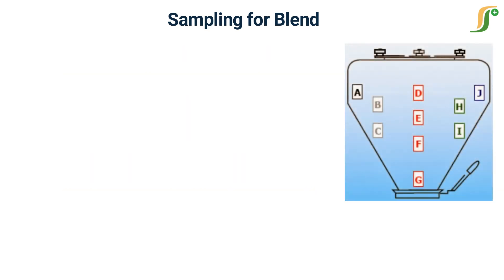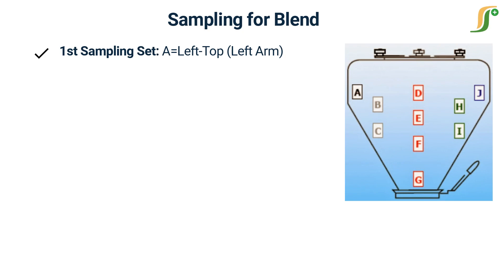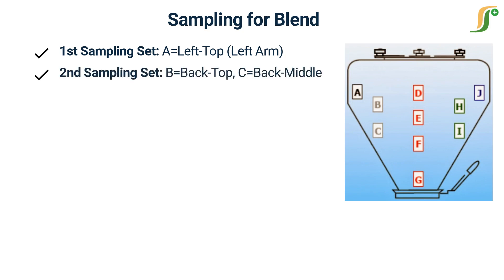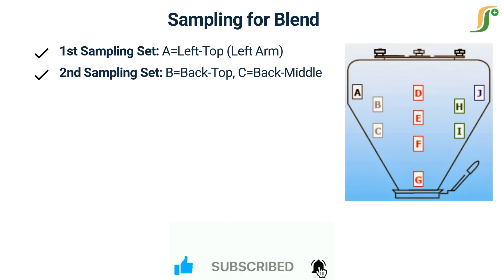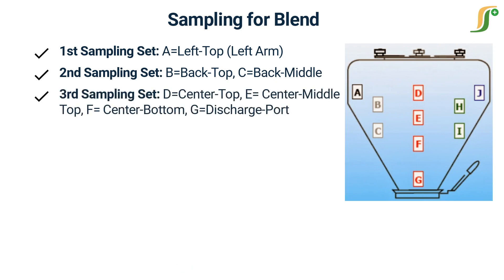These are the sampling locations for the octagonal blender. First sampling set: take sample from location A, which is left top, as shown in figure. Second sampling set: take the sample from location B, which is back top, and location C, which is back middle. Third sampling set: take the sample from location D, which is center top; location E, which is center middle top; location F, which is center bottom; and location G, which is the discharge port, as shown in figure.